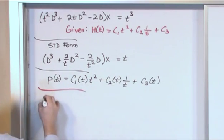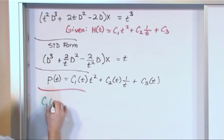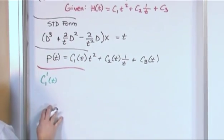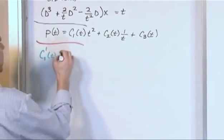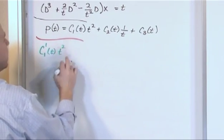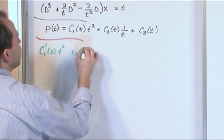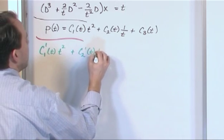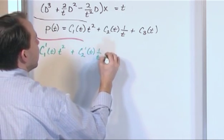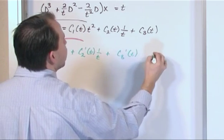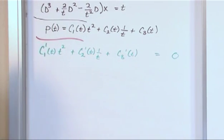We write down the particular solution, exactly as we did before, except we make them first derivatives. We put a prime mark there. We have c1 prime of t times t squared, then we have c2 prime of t times 1 over t, and then we have c3 prime of t, and the first equation always gets a 0 on the right hand side.